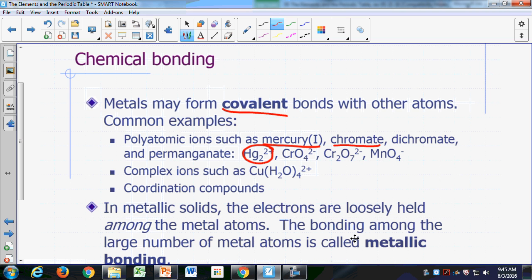Same thing with the chromate ion, that's a polyatomic ion, formula is CrO4 2-. Chromium is a metal, oxygen is a non-metal, there's a covalent bond between the chromium and the oxygen.